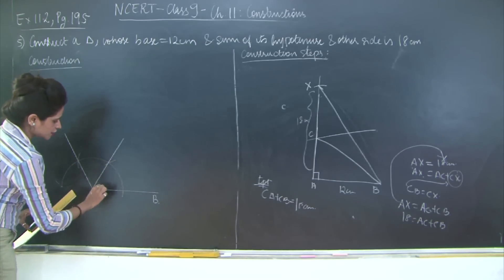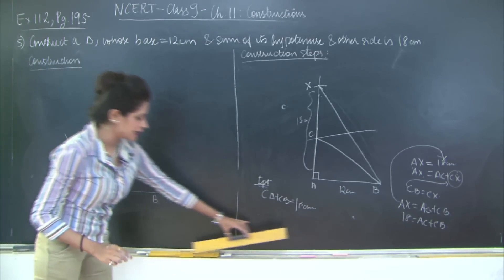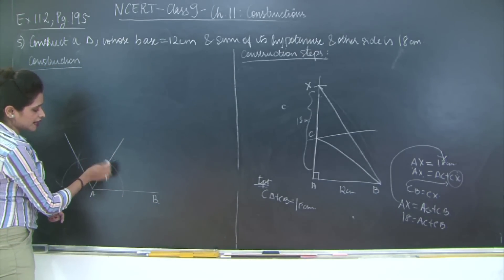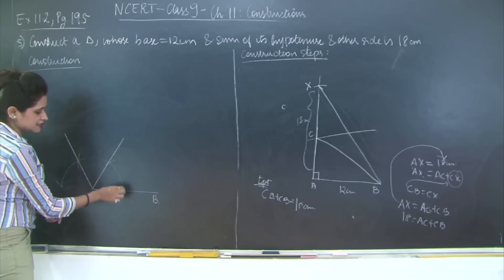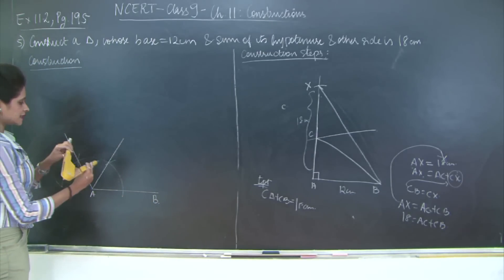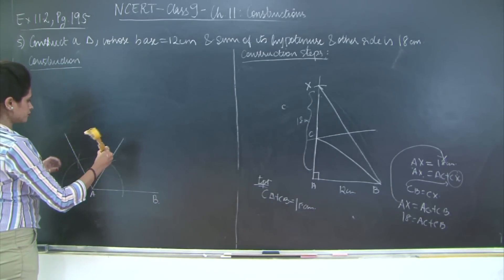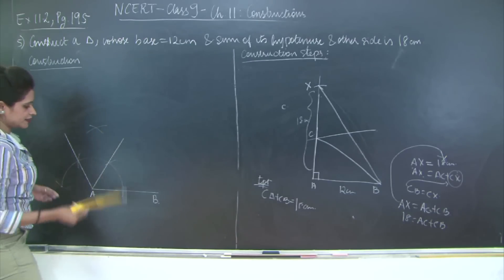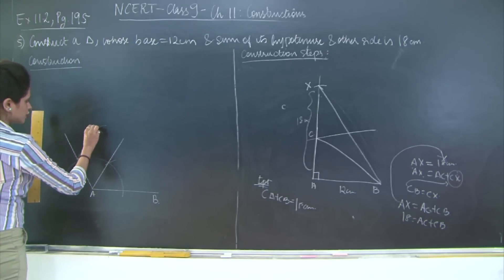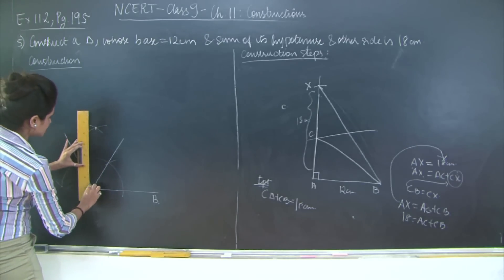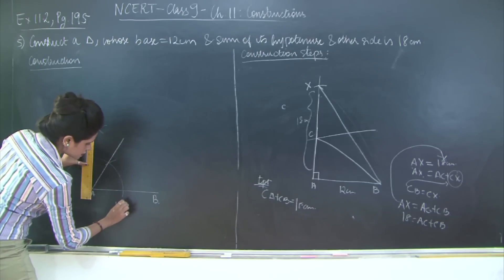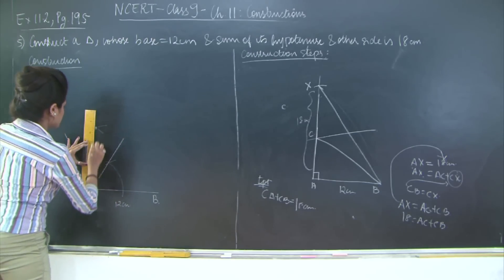I join these two points — this angle is 60 degrees. I need 90 degrees at angle A. Since this angle is also 60 degrees, if I bisect it I get 30 degrees, and 30 plus 60 equals 90 degrees. So I bisect this angle to get the angle bisector, then join the point of intersection and extend this line. AB was 12 centimeters.